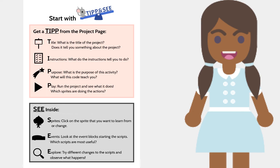Now that we've used Tip and See together, it's your turn to use it on your own. And remember, computer scientists learn by experimenting and almost never get things right on the first try. When being a computer scientist, which you all are, you will need to learn the correct answers by finding your mistakes and exploring. Good luck using Tip and See on your own!